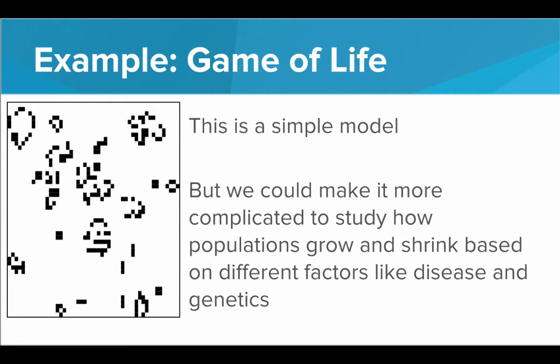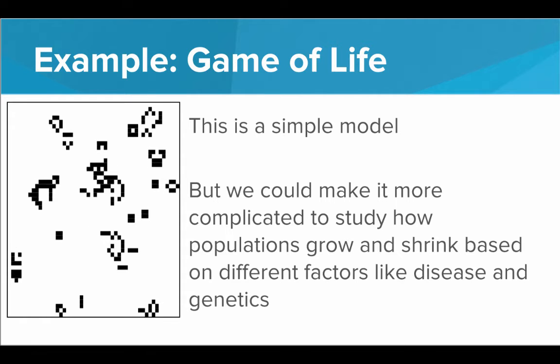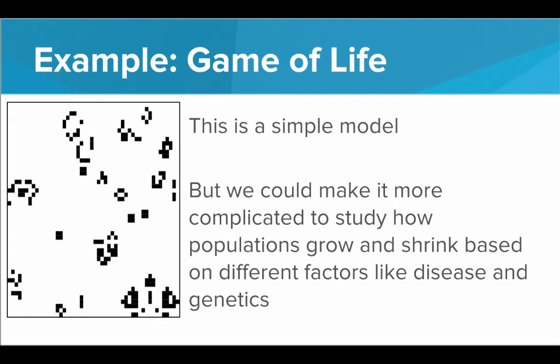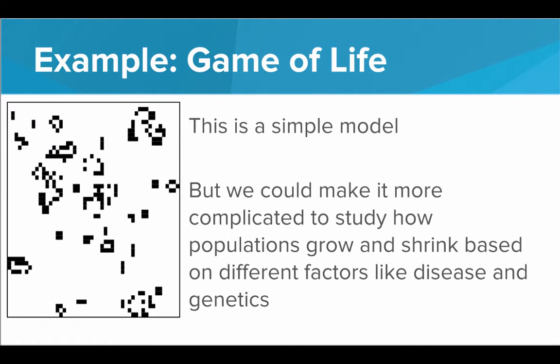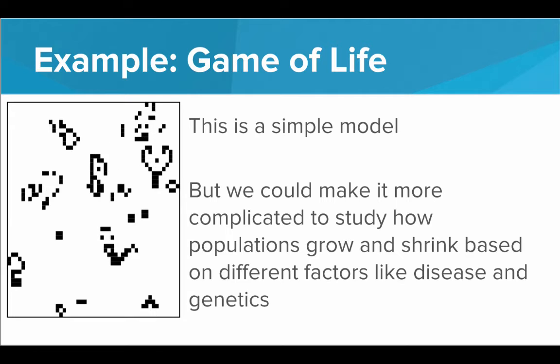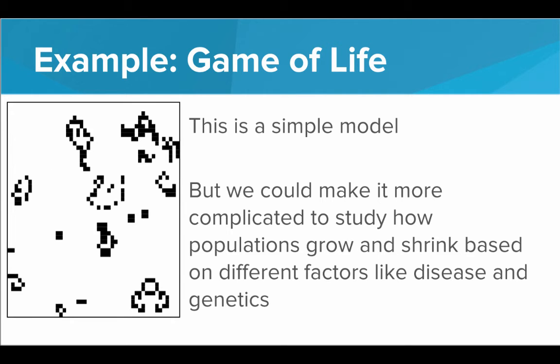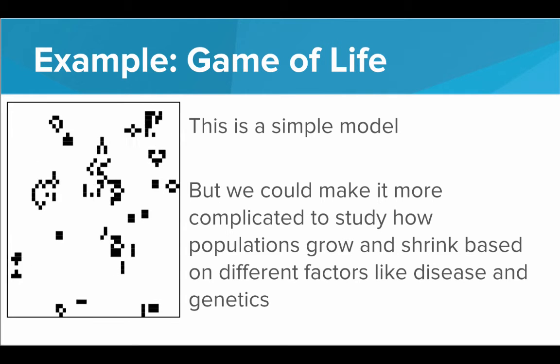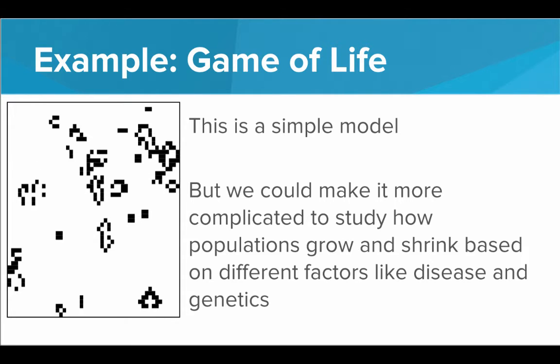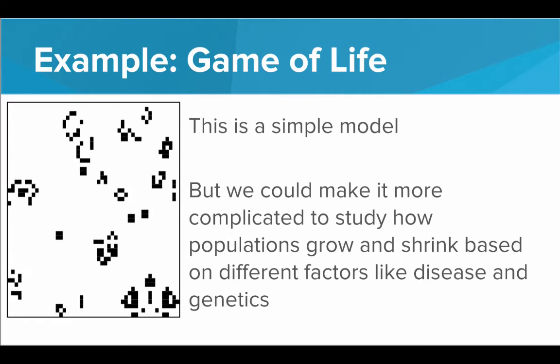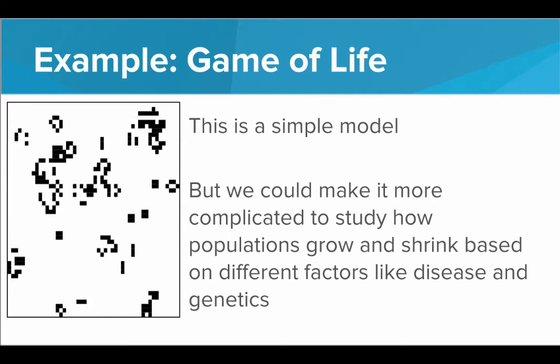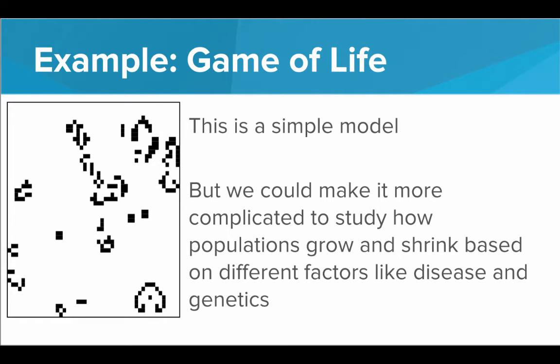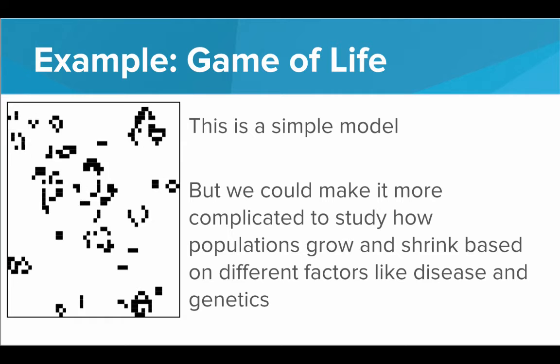This is a simple model, but if we wanted to, we can make it much more complicated and study how these populations of cells grow and shrink based on various factors. Maybe we introduce disease into the model or genetics. Maybe each cell has a random chance of being born with a given disease and it can infect the cells around it. Or maybe if a certain cell has been alive for 30 generations, then its offspring are more likely to survive in future generations. We can constantly be complicating the model to study the things we want to study.